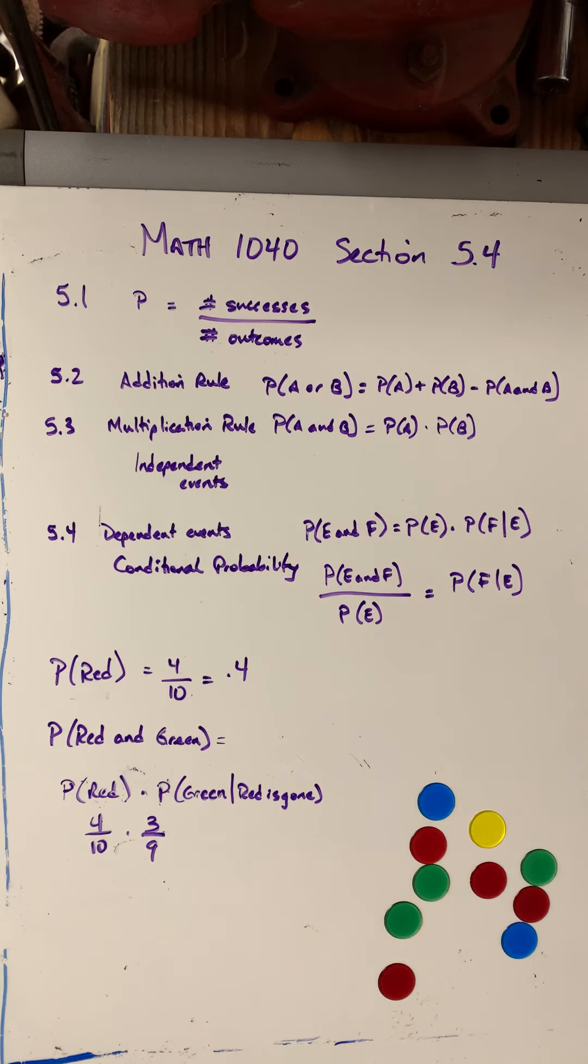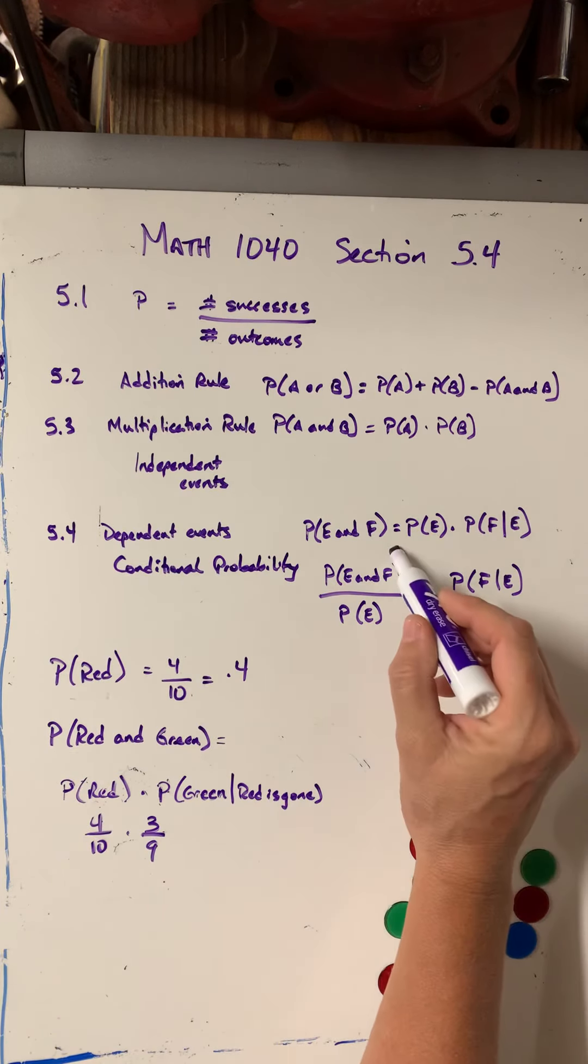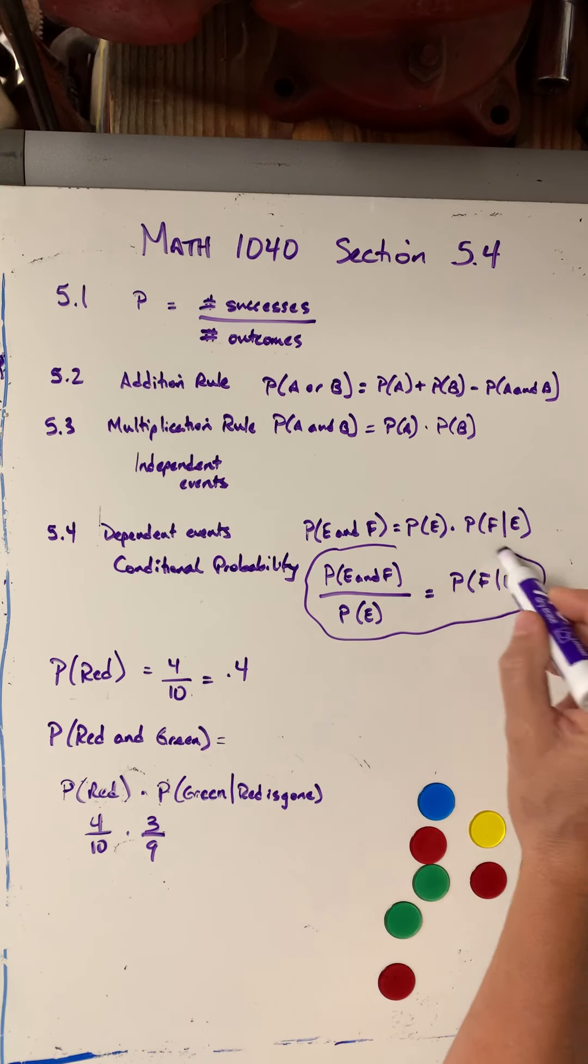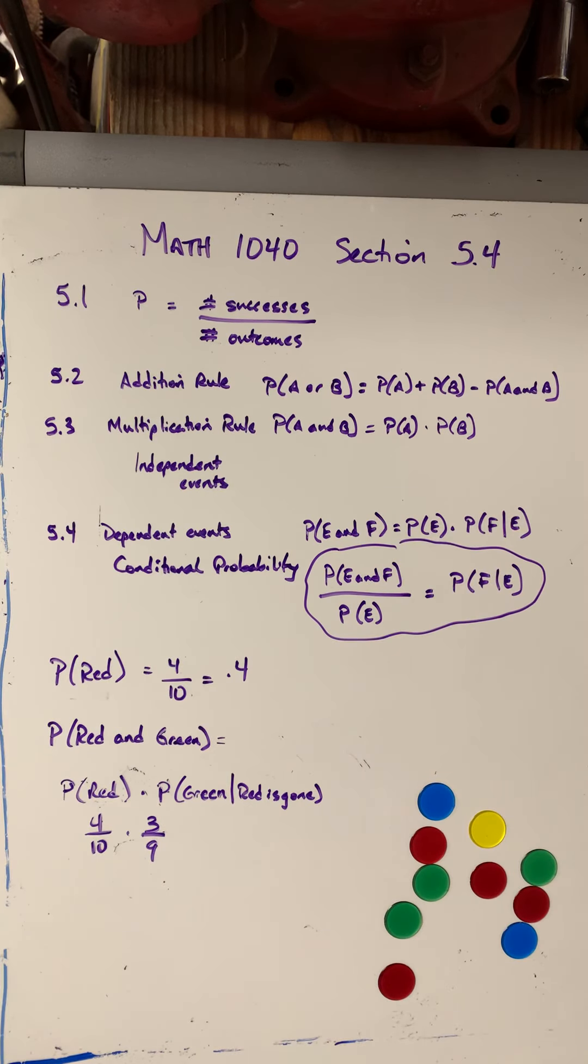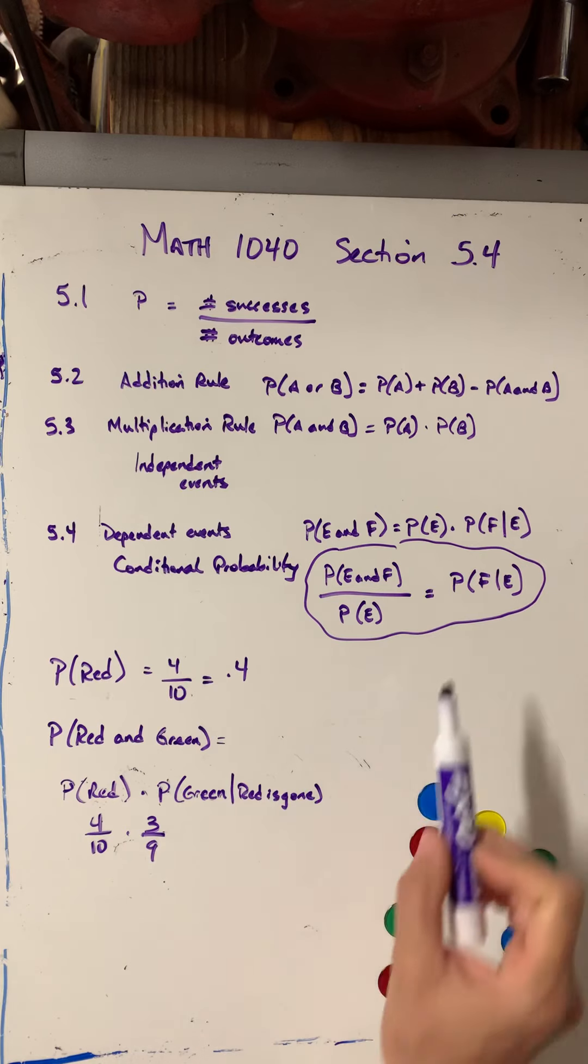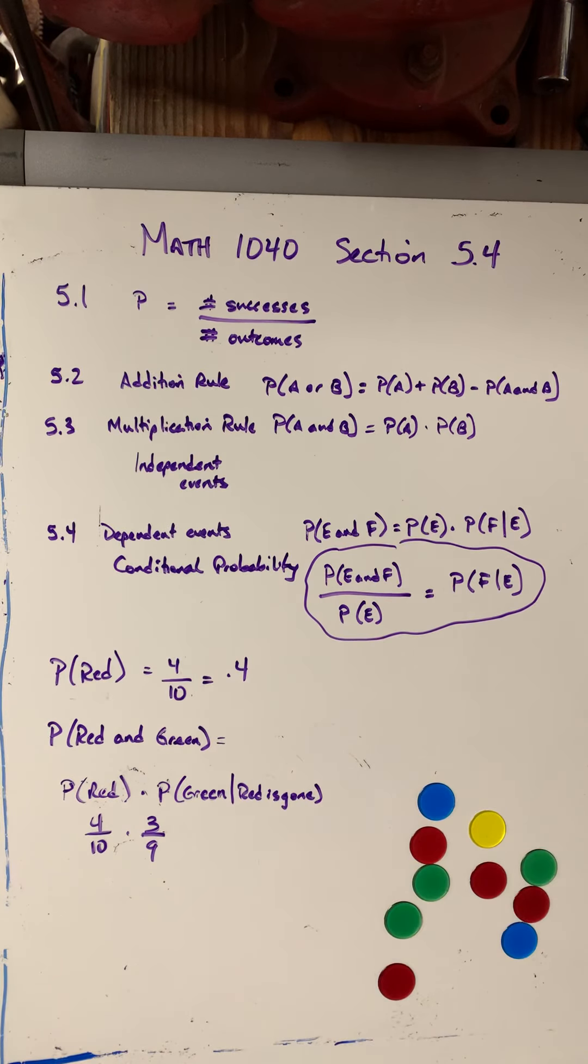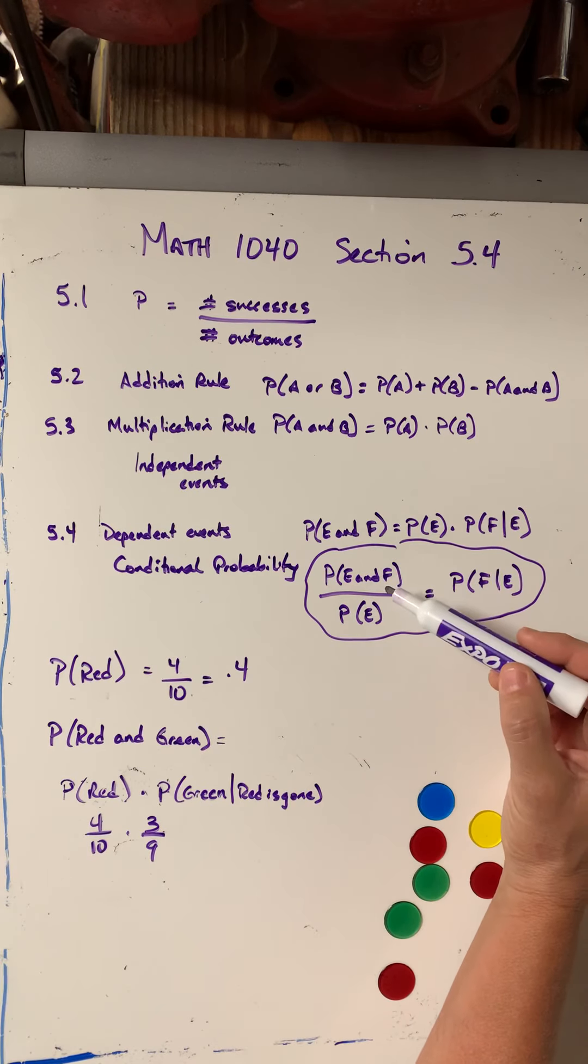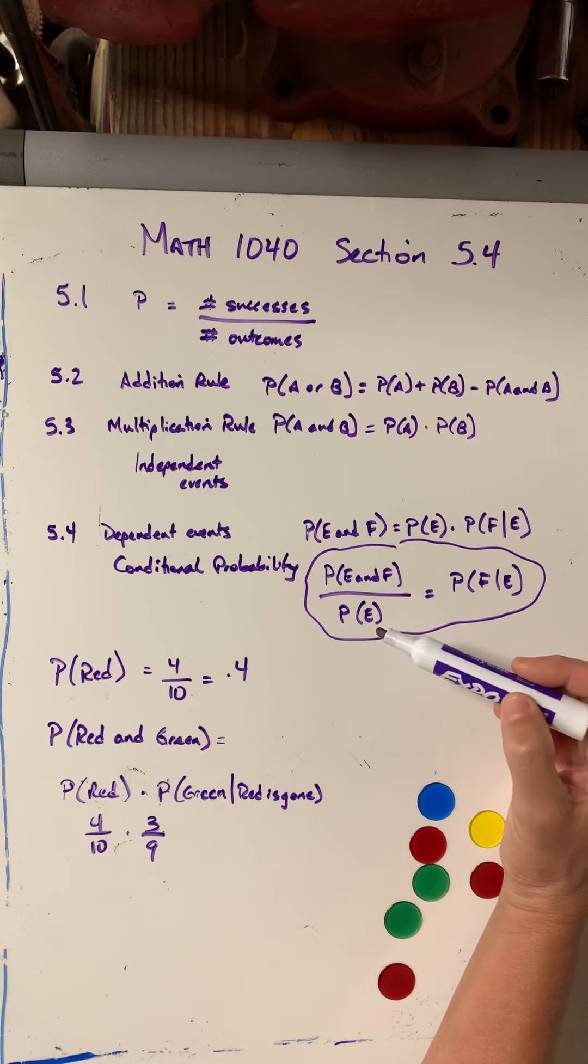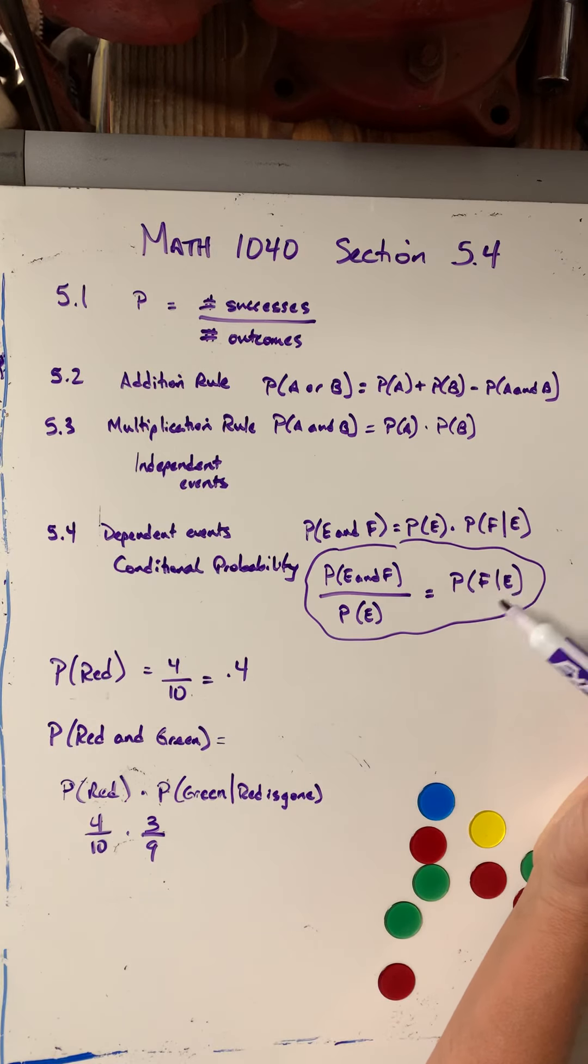So this bar means given that this condition has occurred. So this is the formula that they show in the notes and in the textbook. And when would I use this formula in this format if they simply gave me the probability? So like if they said, P of E and F is 0.5 and P of E is 0.7, what is P of F given E? I would just plug those in and use that formula.